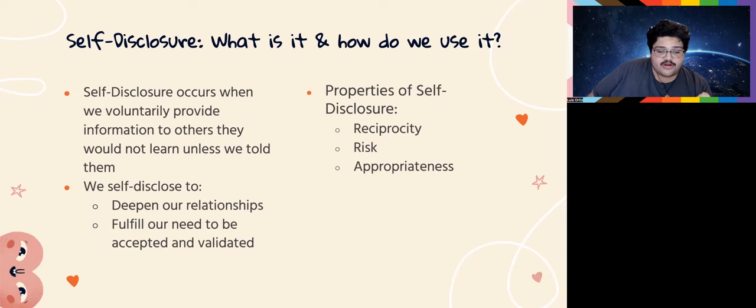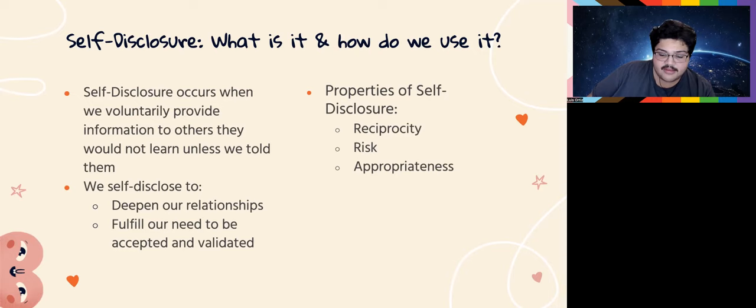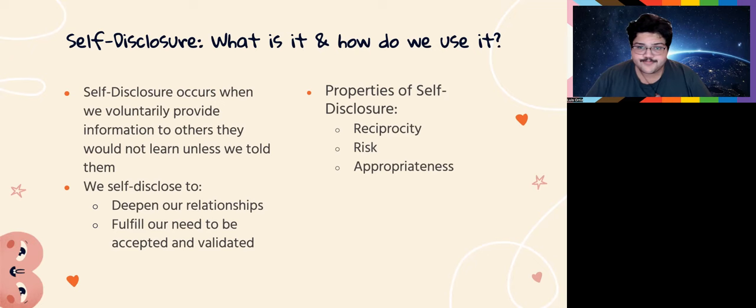Appropriateness is the third property. Have you ever had someone trauma dump on you randomly? It's not comfortable because your perceived closeness with that person is quite low. However, sharing information slowly over the course of a relationship is appropriate — as you share more personal things, the relationship develops naturally.